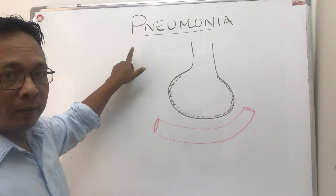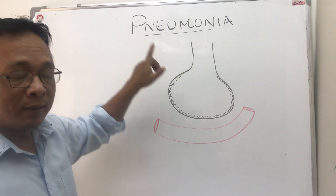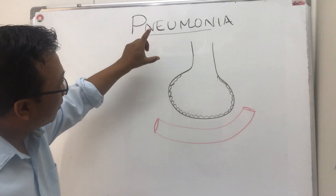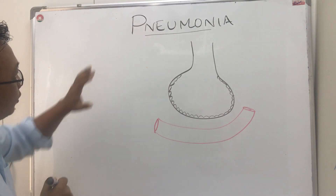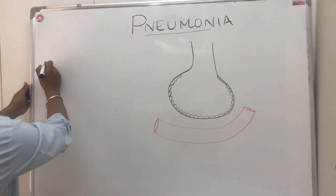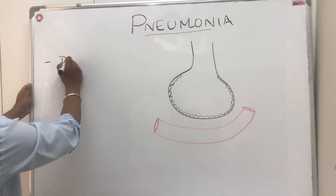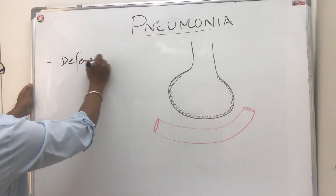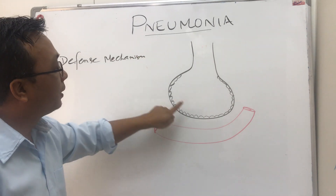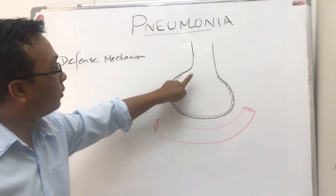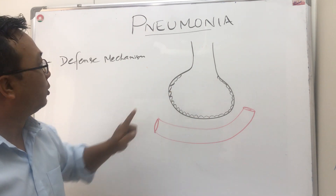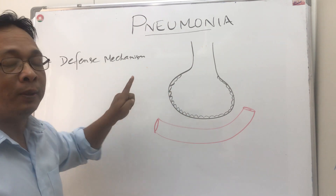When you have to write in the exam, you have to write in a proper organized way. Regarding the pathophysiology of pneumonia, first you have to mention the defense mechanisms of the lung. The organism has to overcome all the defense mechanisms so that it can reach here and cause pneumonia.